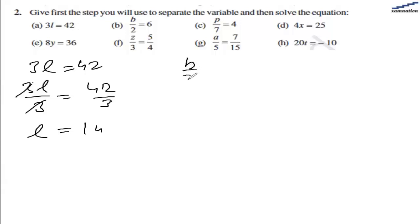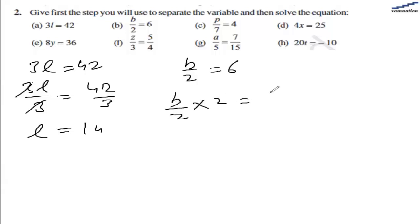The second part is B divided by 2 equal to 6. Since we have a number dividing the variable, we multiply both sides by 2. The 2s cancel out, leaving B on the left hand side, and on the right hand side we have 6 multiplied by 2 which is 12.